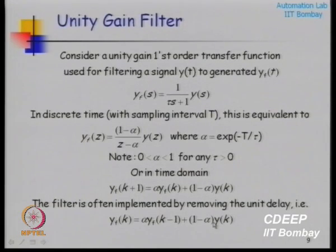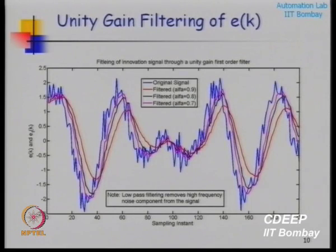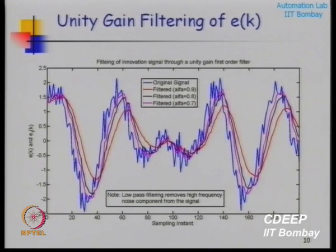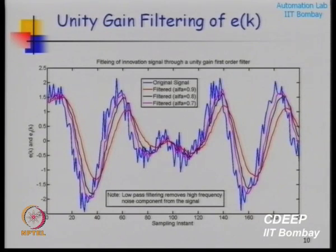Depending on how you choose alpha, the signal is filtered through this first-order filter. For different values of alpha, the blue signal shows the original unfiltered signal and the other three signals are filtered for different alpha values. Alpha is a tuning parameter — choose it between 0.8 and 0.99. When doing LQG or MPC control, you will have to tune this parameter and may find that higher values help stabilize the system.